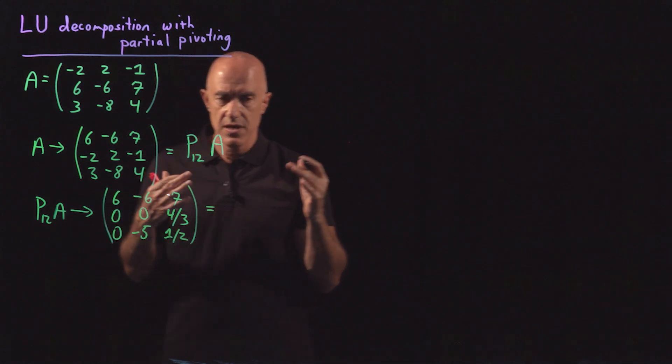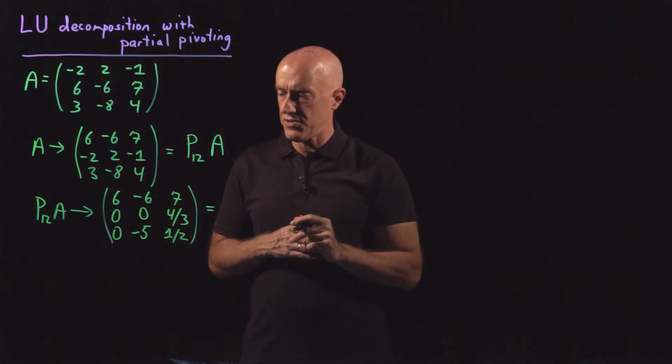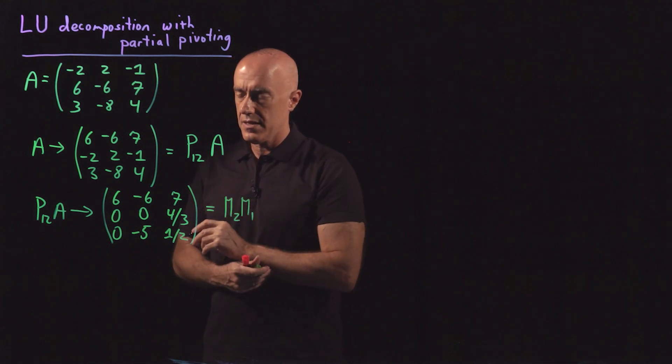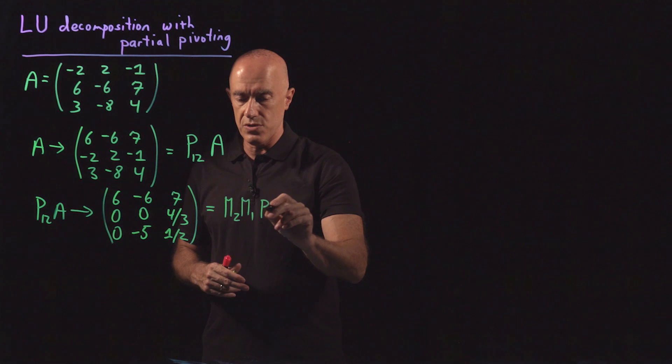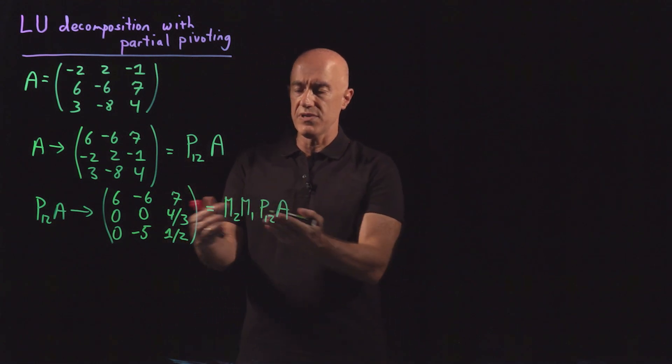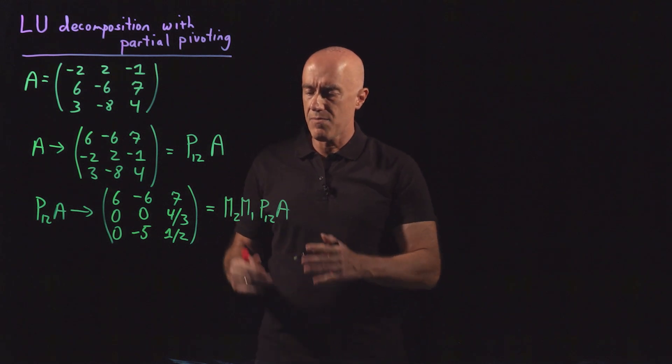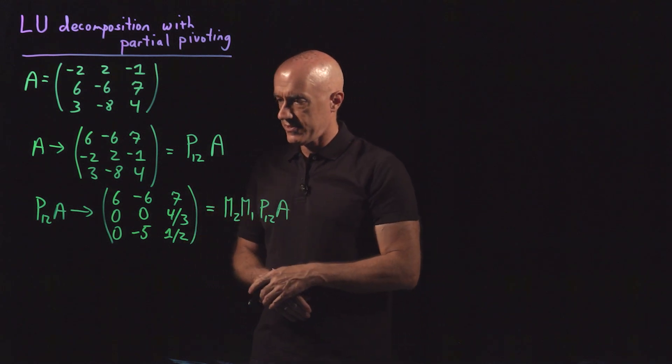And then this was multiplication by two elementary matrices. So I'll call that M2 and M1 times P12A. So representing symbolically Gaussian elimination by multiplication by matrices.